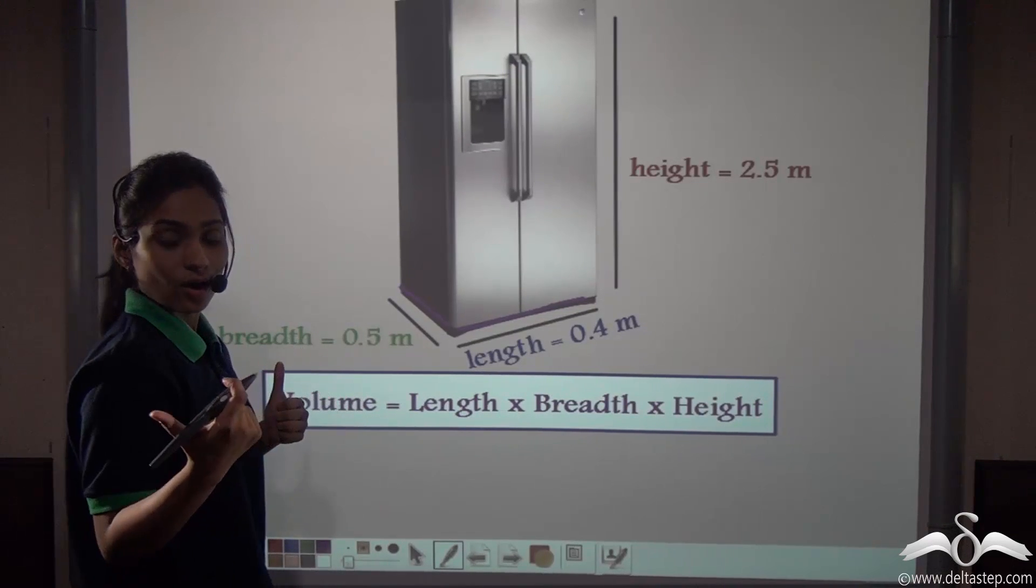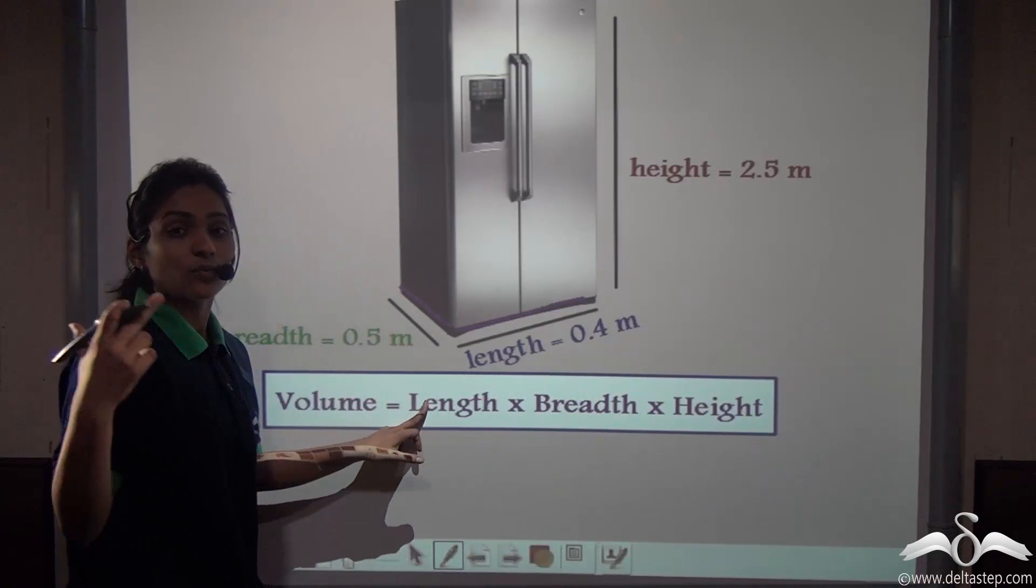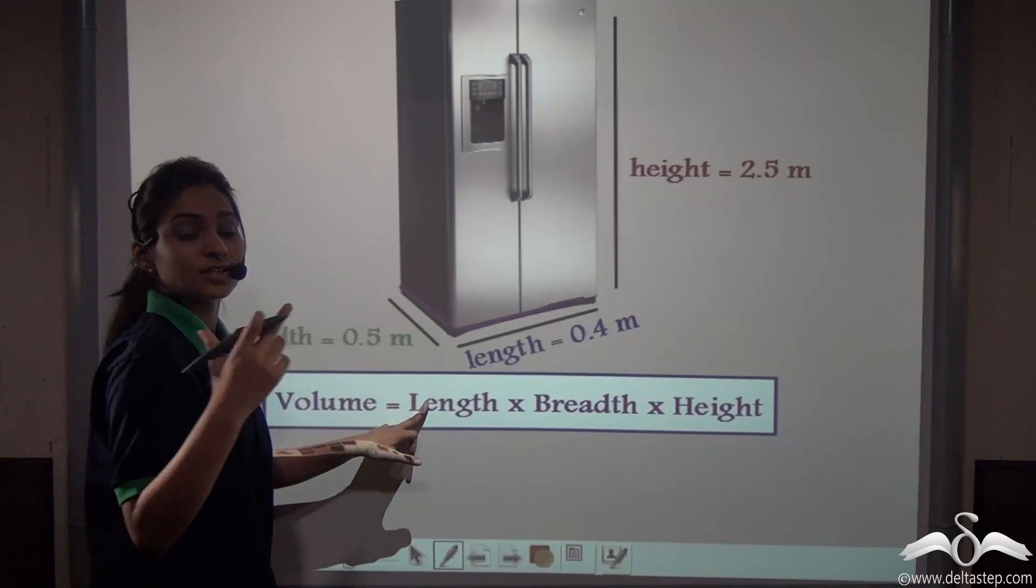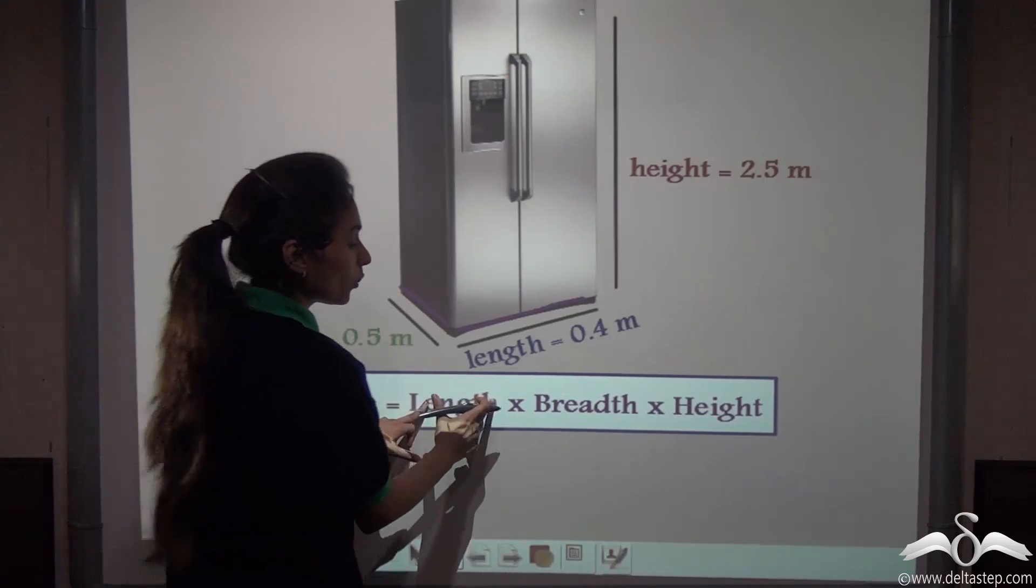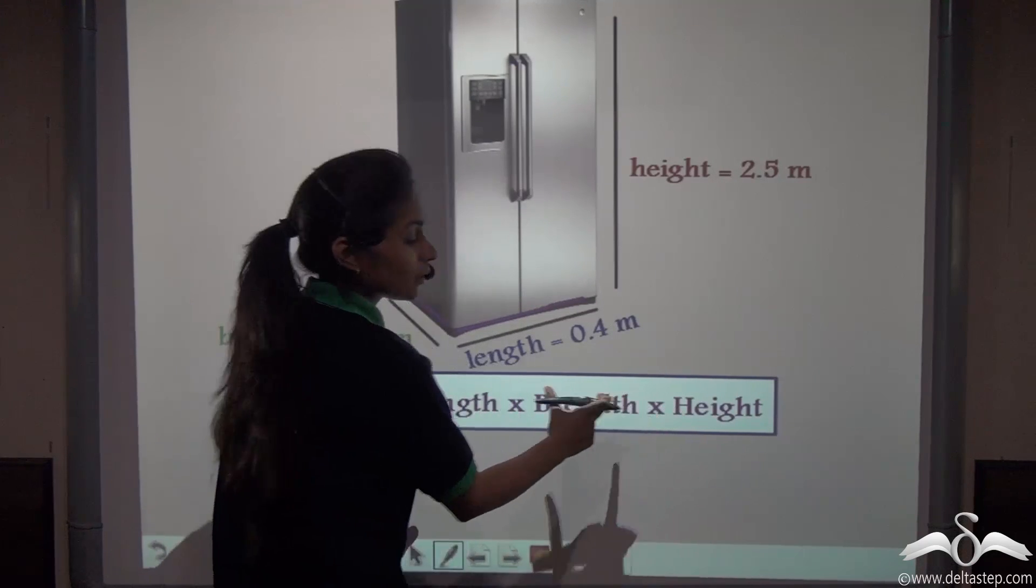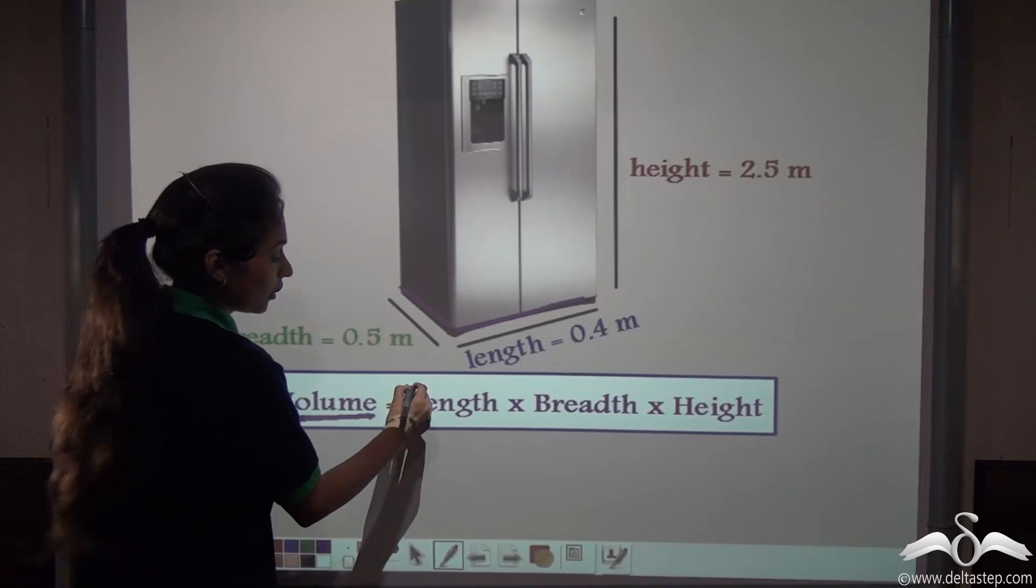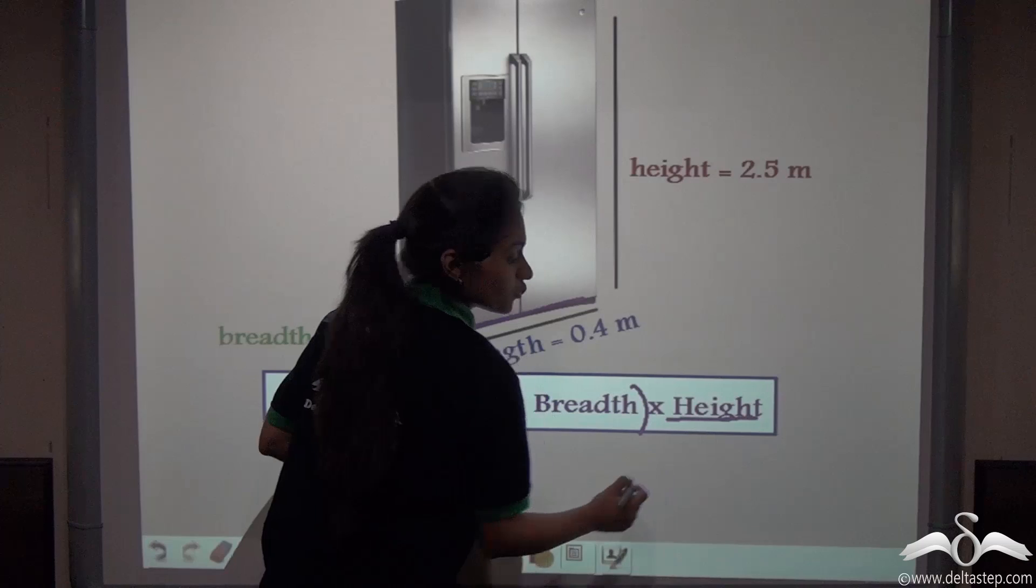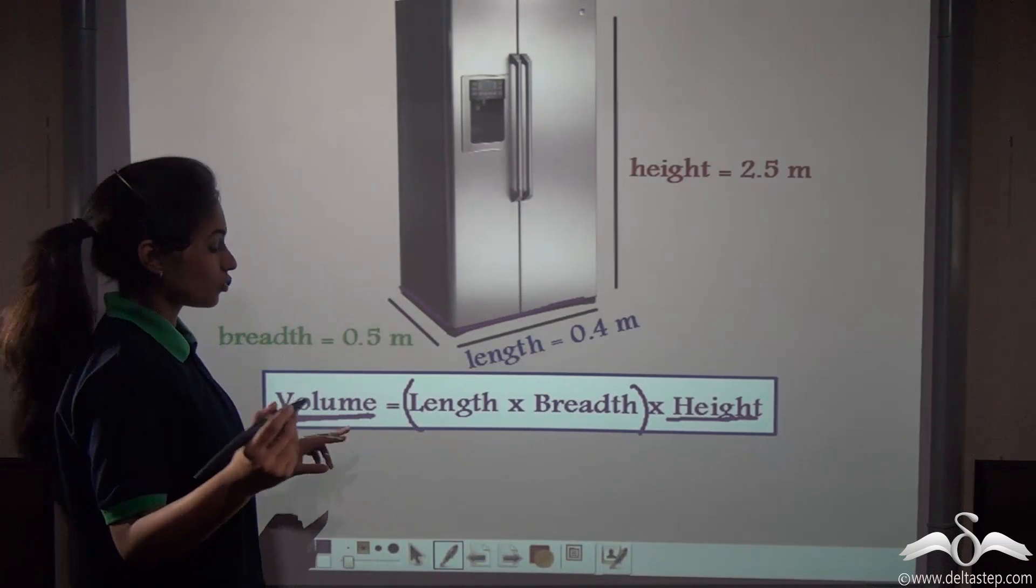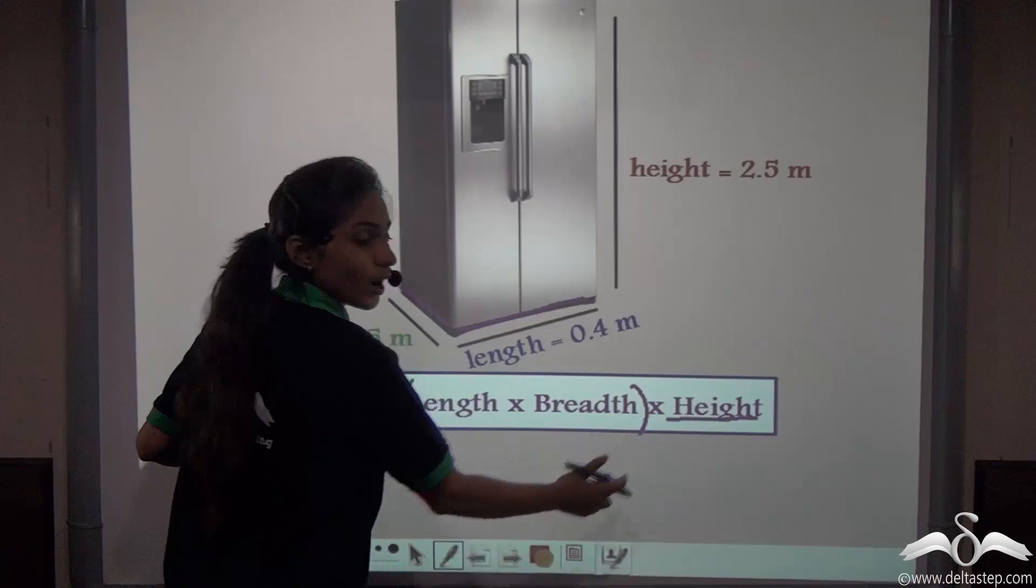The area of the rectangle is length into breadth. Now to take out the volume of this cuboid which is actually a rectangle with some thickness or some height, what we do is multiply the height with it to calculate this volume. So the volume is actually this area of the rectangle into the height which makes it a cuboid. So the volume of a cuboid is length into breadth into height.